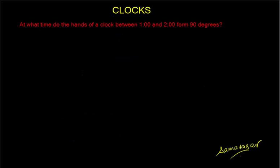What you got in the previous case - now in this case I will be only using the method of relative velocity instead of doing it by the algebraic method. Now we're trying to calculate at what time do the hands of a clock between 1 and 2 form 90 degrees. In fact if you try to solve it by algebraic method you might find that it is slightly more difficult.